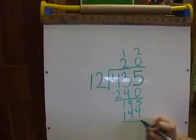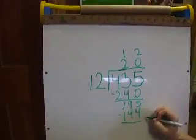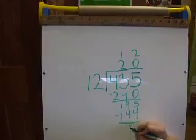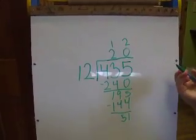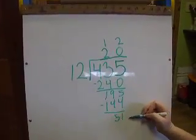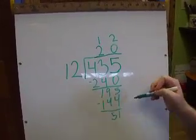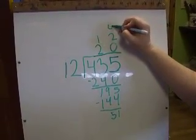So I subtract 195 minus 144. I get 51. So 12 still goes into 51 more times. So I'm going to say it goes in 4 times.